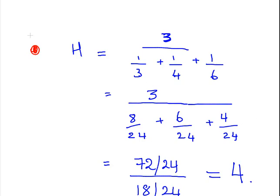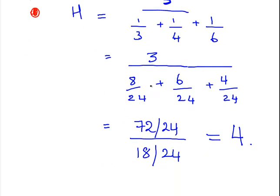A little bit of algebra. 3 divided by 8. 1 third is 8 over 24, 1 quarter is 6 over 24, and 1 sixth is 4 over 24. That is 18 over 24 if you add them all up. 72 over 24 is 3. Sorry, that's 72 over 24. So the harmonic mean here is 4 hours.